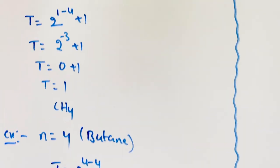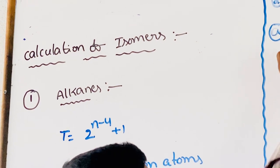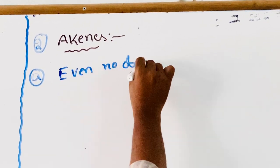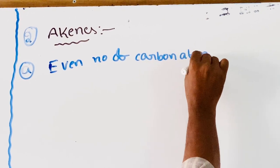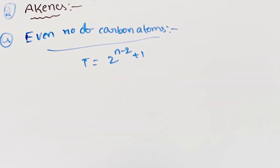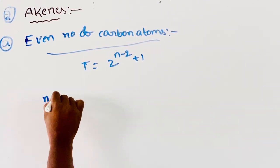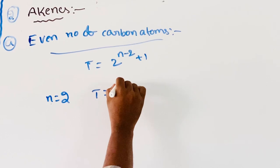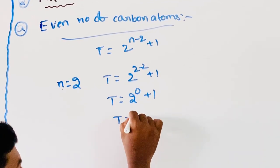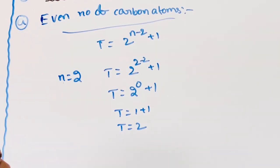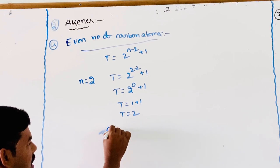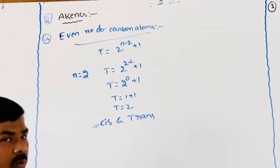This is the alkanes calculation of isomers. Second, from alkenes: for even number of carbon atoms, the formula is T = 2^(n-2) + 1. For n = 2, T = 2^(2-2) + 1 = 2^0 + 1 = 1 + 1 = 2. Total number of isomers is 2, that is cis isomer and trans isomer.